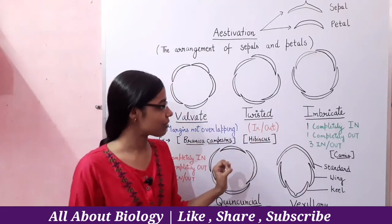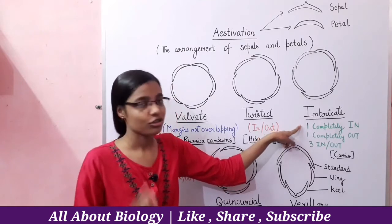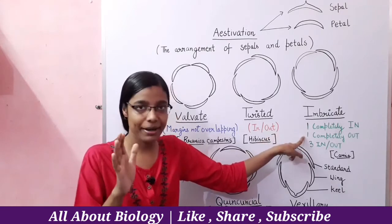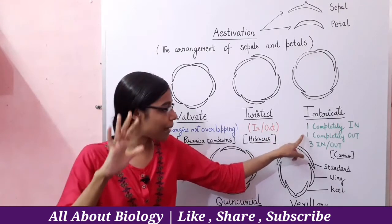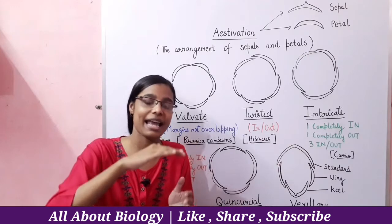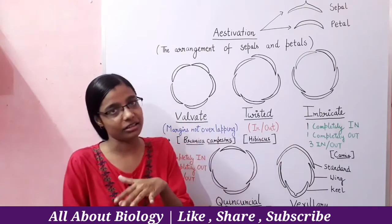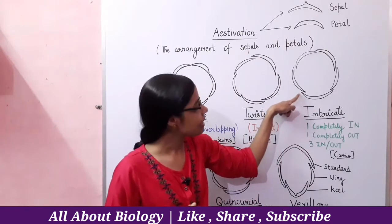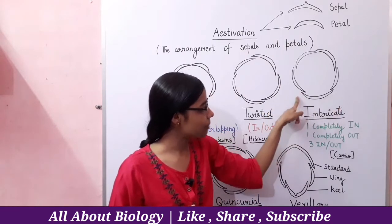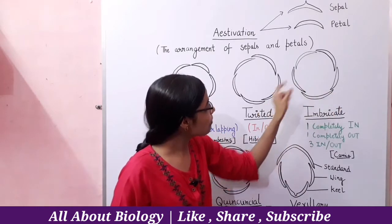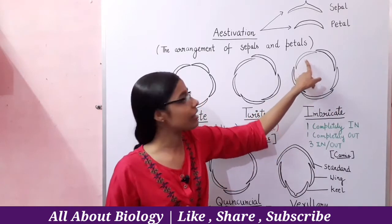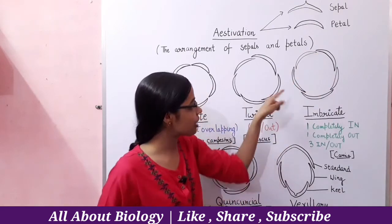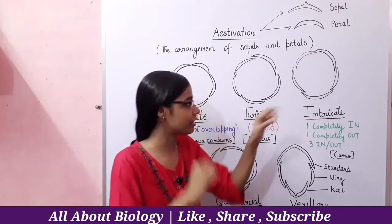In Imbricate Estivation, one petal is completely inside, one petal is completely outside, and the rest of the petals have two margins — one inside and one outside. Look here: this petal has both margins on the inside, and this petal has two margins on the inside as well.